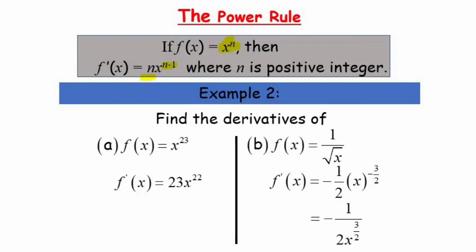For example, when we differentiate x to the power of 23, we bring 23 down as the coefficient and subtract the power by 1, giving 23x²². For part b, when we want to differentiate 1/√x, we rewrite it as x to the power of negative one-half.